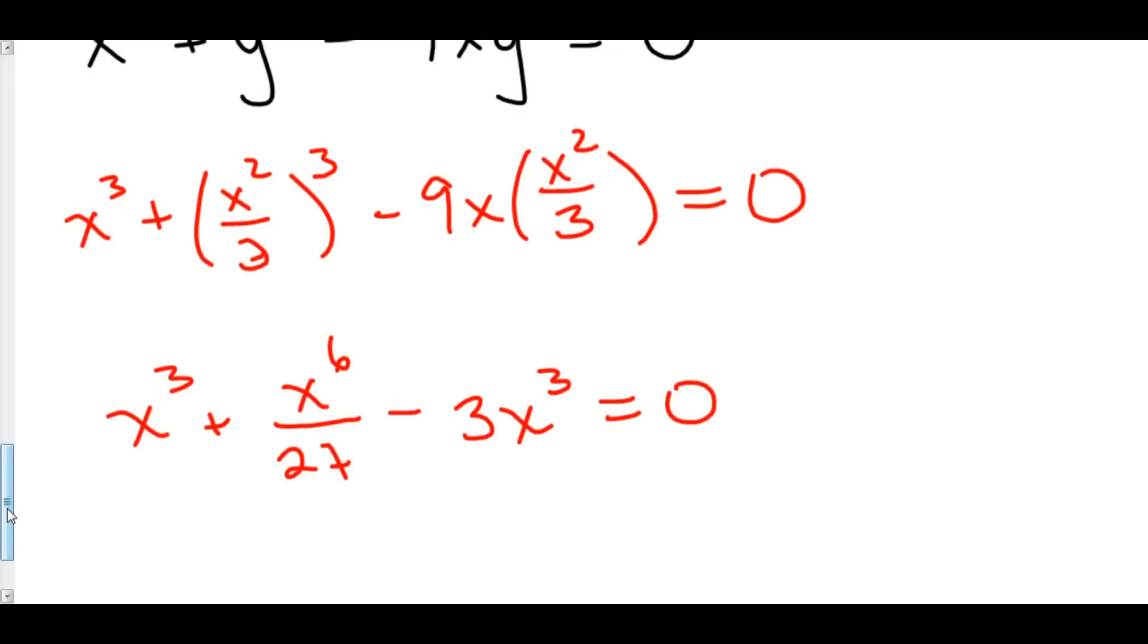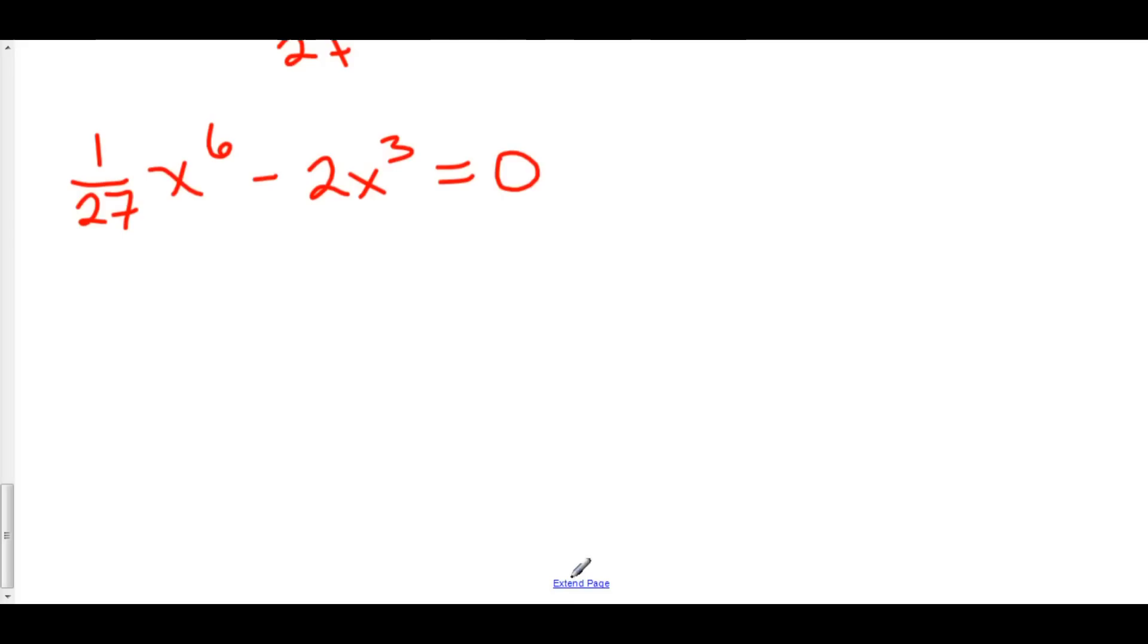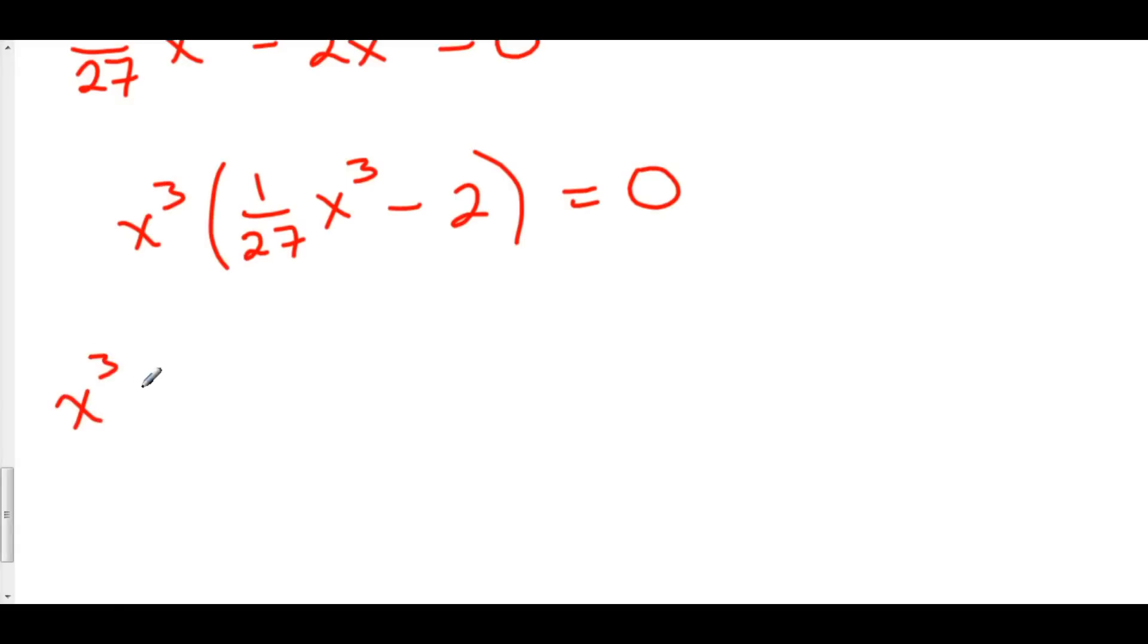x cubed minus 3x cubed yields negative 2x cubed. So finally we have x to the sixth, or let's write it as 1 over 27x to the sixth minus 2x cubed is equal to 0. From this point, we can factor. Let's factor out an x cubed. Then we have 1 over 27x cubed minus 2, and this is all equal to 0. Well, that means that either x cubed is equal to 0 or 1 over 27x cubed minus 2 is equal to 0. So we already have x equals 0.